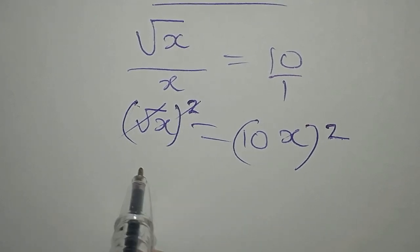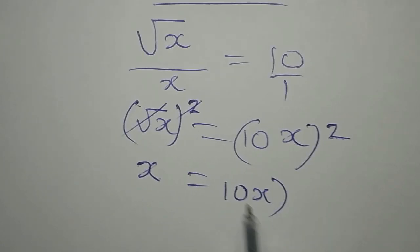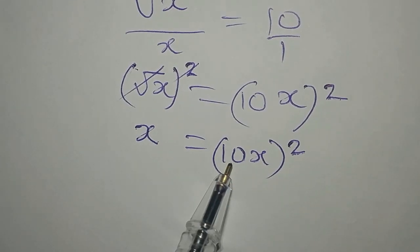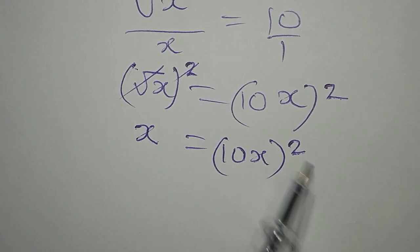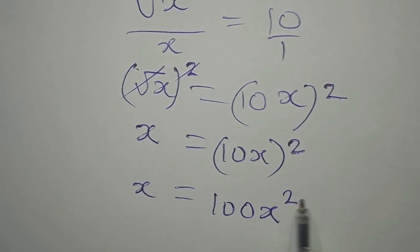So this and this will go, so that x is equal to 10x to the power of 2. This means that both 10 and x are having the power of 2, so x is equal to 100x squared.